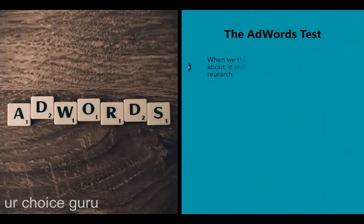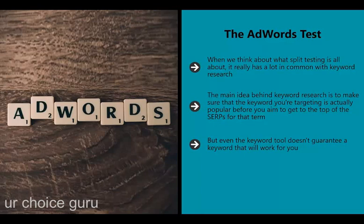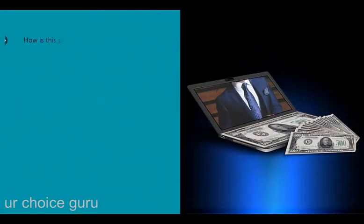The AdWords test: split testing has a lot in common with keyword research - the main idea behind keyword research is to make sure a keyword you're targeting is actually popular before you aim to get to the top of the SERPs for that term. That's the exact same thing we see with split testing: making sure a strategy is successful before we use it. But even the keyword tool doesn't guarantee a keyword that will work for you. Even if you land the most popular keyword in the world, you might still struggle with CTR or find that the intent behind the keyword isn't right - the people searching that phrase aren't interested in buying your product. Imagine doing all that work to conquer a keyword and still not being successful.